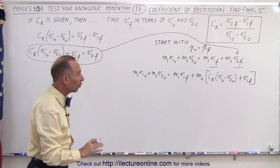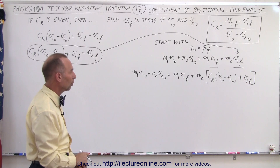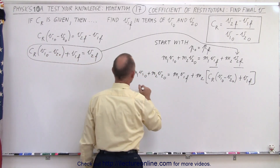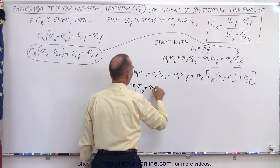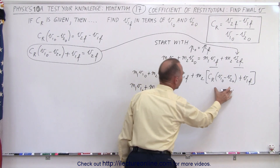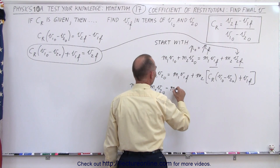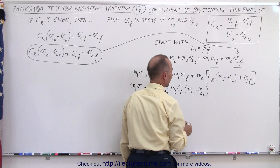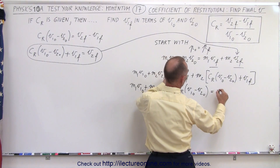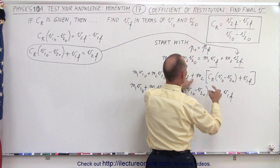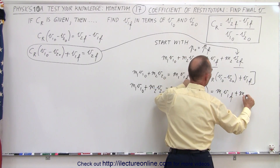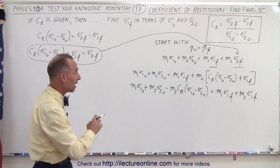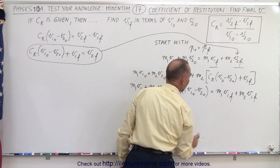Now we have an equation that only contains v1 final and everything else should be known, so we isolate v1 final. Moving terms across gives: m1·v1_initial plus m2·v2_initial minus m2·(coefficient of restitution)·(v1_initial minus v2_initial) equals m1·v1_final plus m2·v1_final. We factor out v1 final and then divide both sides by (m1 plus m2).